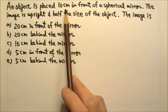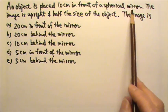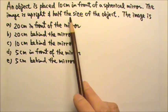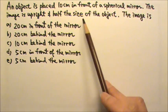An object is placed 10 cm in front of a spherical mirror. The image is upright and half the size of the object. Where is the image?